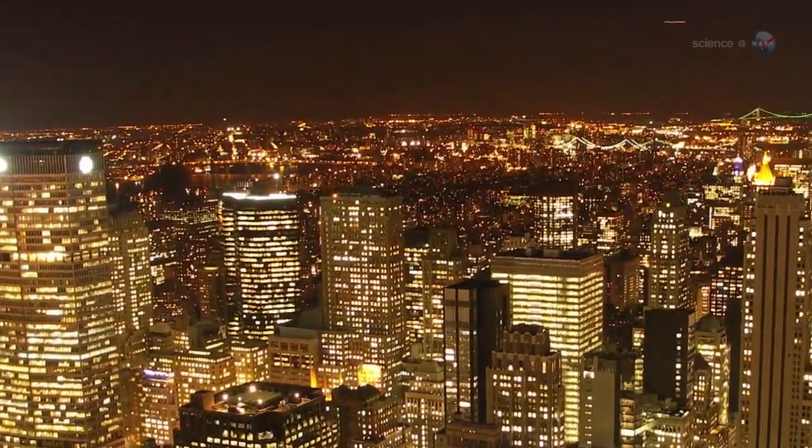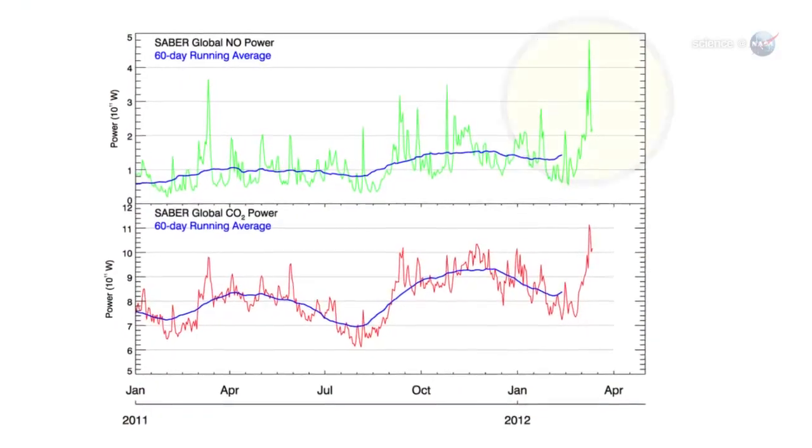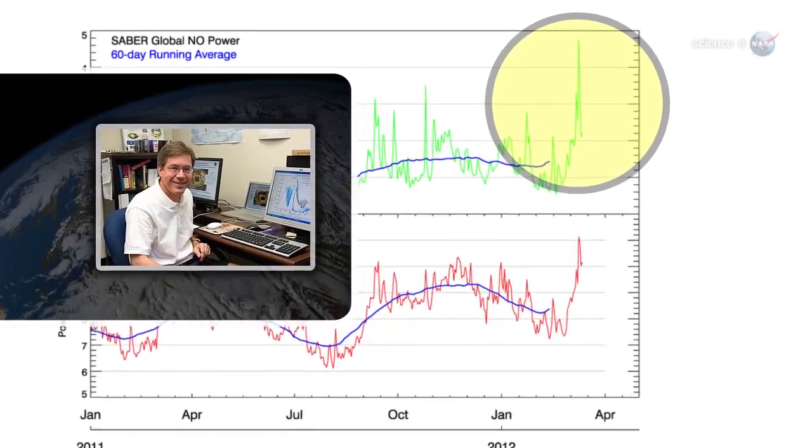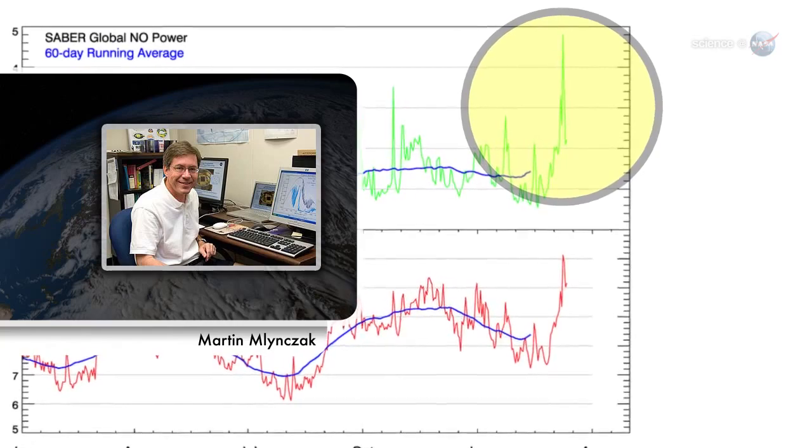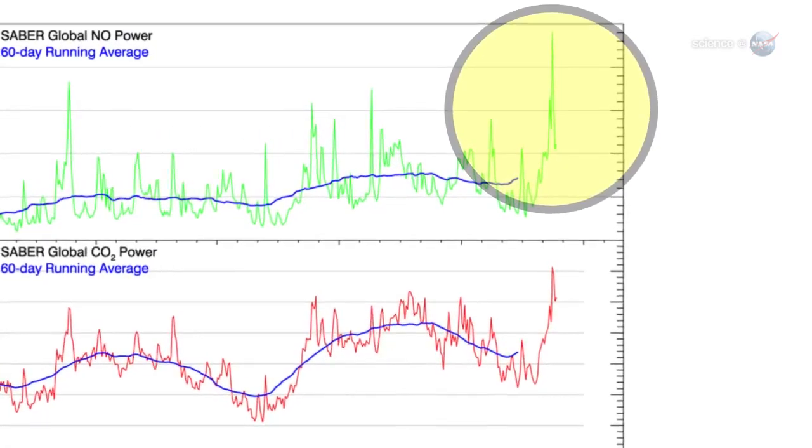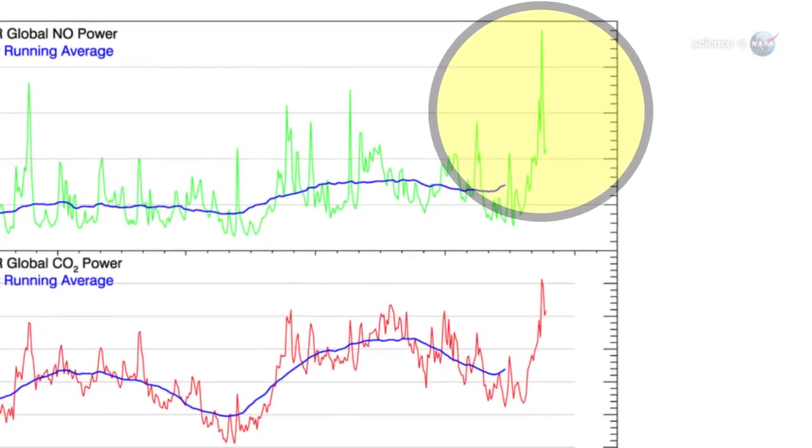This was the biggest dose of heat we've received from a solar storm since 2005, says Martin Malintchak of NASA Langley Research Center. It was a big event and shows how solar activity can directly affect our planet.